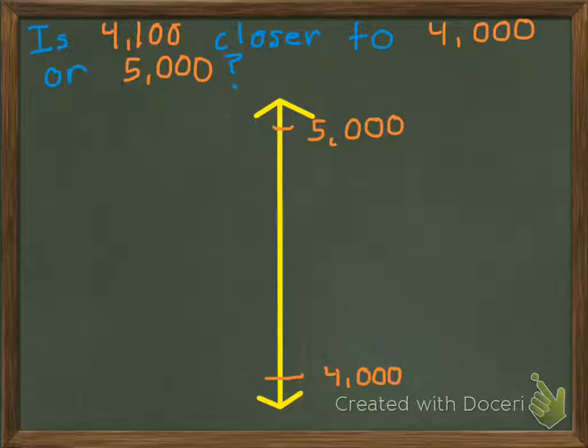So remember that halfway point is going to tell me, do I need to round up, or is my number going to stay the same? So the halfway point would be 4,500.